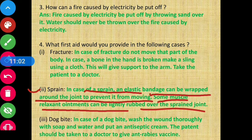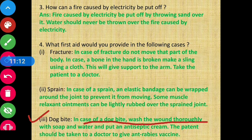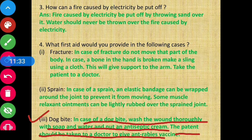In case of a dog bite, wash the wound thoroughly with soap and water and apply an antiseptic cream. Then take the patient to a doctor to give the anti-rabies vaccine.